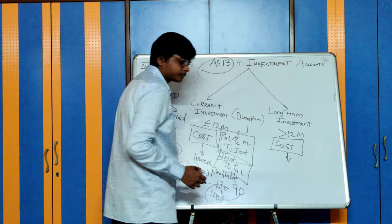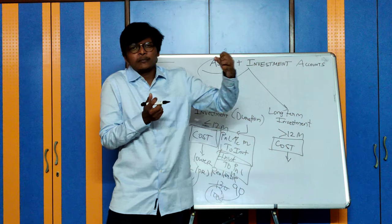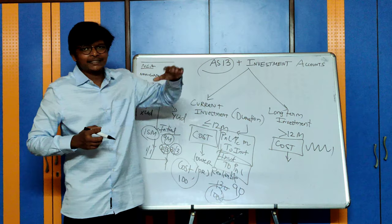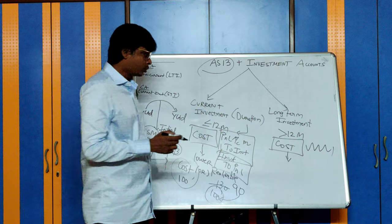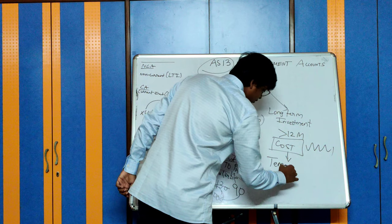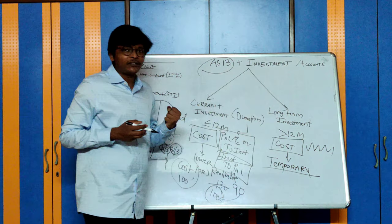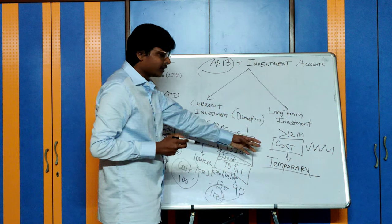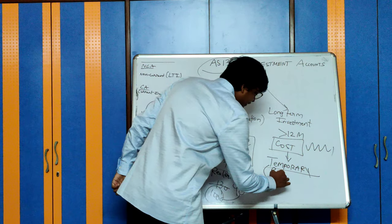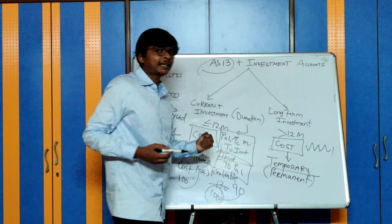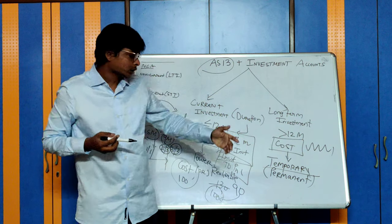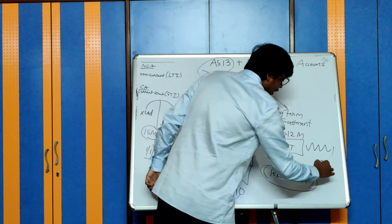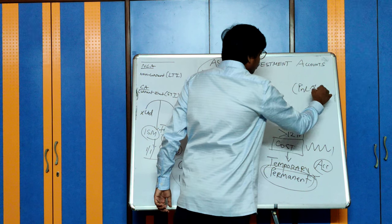Coming to long-term investments — the concept here is I am going to hold this for the long term, 5 years or 10 years, depending on the intention. So any small fluctuations in the market price of the share or investment, we will not account. Any temporary decline in the value of investments will not be accounted. Only if the decline is other than temporary — meaning if you feel it is permanent in nature — for example, the company where you have invested has had its credit rating decreased — only such permanent decline will be accounted by debiting your profit and loss account and crediting the long-term investment account.